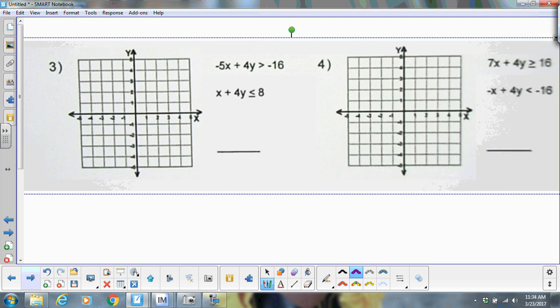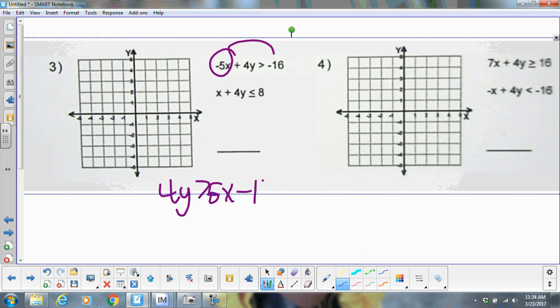Now in number three and four, they are not in slope-intercept form yet, so that's the first thing you have to do is rearrange. I'm going to move my 5x, so that's going to give me 4y is greater than positive 5x minus 16, and divide by four. So that's going to be five over four x minus four. So I would start at negative 4, and then I would go up five and right four. That's going to be a dotted line, and it is greater than, so I'm going to shade above right now.